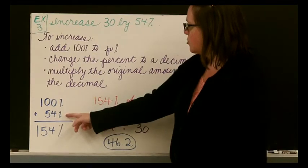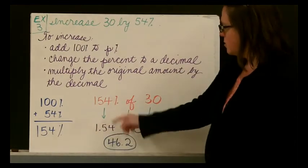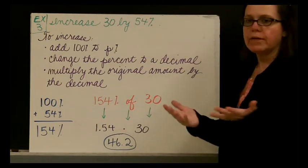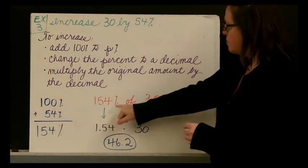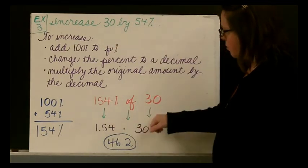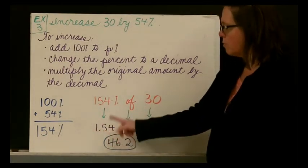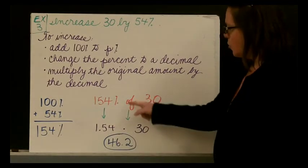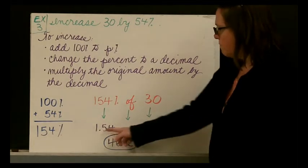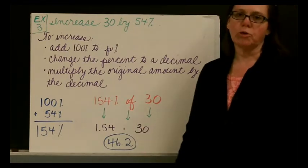And I worked out the steps right here. We take 100%, we add it to our percent of change, and we have 154%. And what we do is, this should look familiar. I set it up this way so that you would have a familiarity with it. We're taking now 154% of our original amount, 30. So I've made my helper arrows. We move from 154% to 1.54 because we divide that by 100. The word 'of' means we are multiplying, and our original amount is 30. So 1.54 times 30 is 46.2. So 46.2 is our new amount.